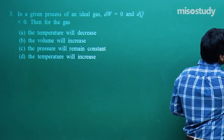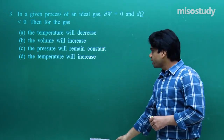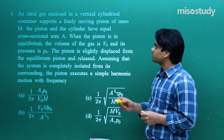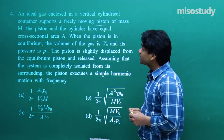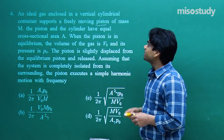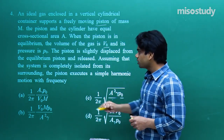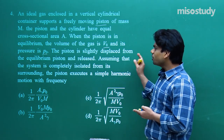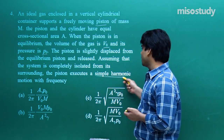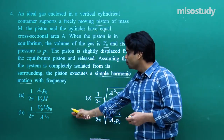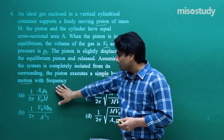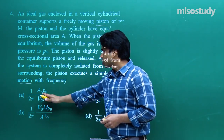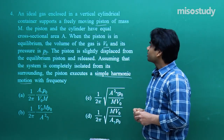Question number four: An ideal gas enclosed in a vertical cylindrical container supports a freely moving piston of mass m. The piston and cylinder have equal cross-sectional area A. At equilibrium the volume of the gas is V0 and pressure is P0. The piston is slightly displaced and released. The system is completely isolated. The piston executes simple harmonic motion — find the frequency.